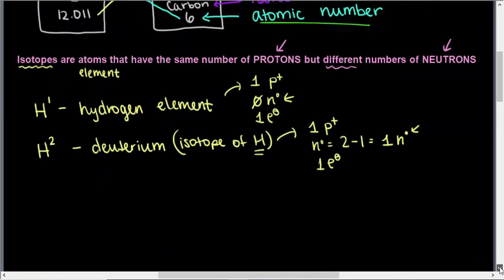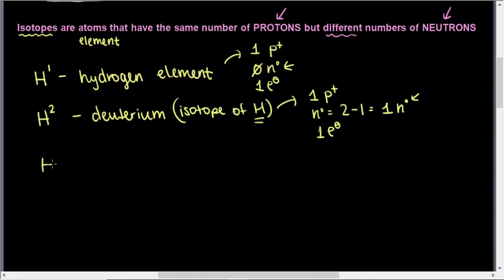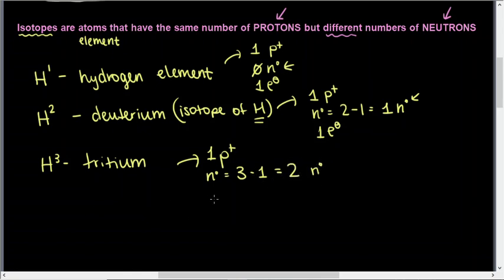One more example is precious tritium - H3. Tritium weighs 3, another isotope of hydrogen. We still have 1 proton. The number of neutrons is 3 minus 1, atomic mass minus the number of protons, which equals 2 neutrons. And the number of electrons is still 1.